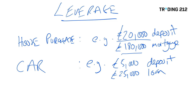Another major purchase — normally the second biggest one after a house — is a car, and again there aren't many people who'll go out and spend thirty thousand pounds cash on a brand new BMW. So they'll put a deposit down and borrow the rest. Again, they're leveraging to get an asset — in this case what's probably going to be a depreciating asset — but they're borrowing the money.